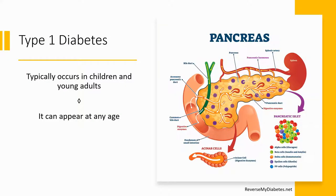Let's start with Type 1 diabetes. It typically occurs in children and young adults, although it can appear at any age. In most people with Type 1 diabetes, the body's immune system — which normally fights infection — actually attacks and destroys the cells in the pancreas that make insulin. As a result, your pancreas stops making insulin, and without insulin, glucose cannot get into your cells, so blood glucose rises above a normal range.